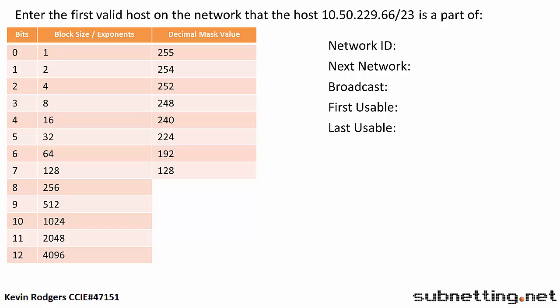Enter the first valid host on the network that the host 10.50.229.66/23 is a part of. This is a question type 1. Until you have submitting 100% locked up, we recommend you solve this type of question for all possible variables.